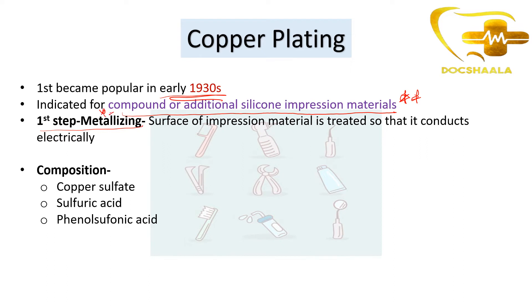The first step in making an electroform die — whether copper plating or silver plating — is known as metallizing. Metallizing means the surface of the impression material is treated so that it conducts electricity. This step is common to both copper and silver plating processes.